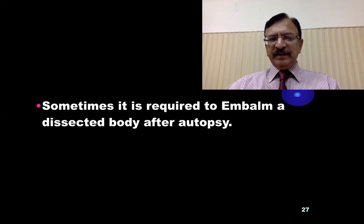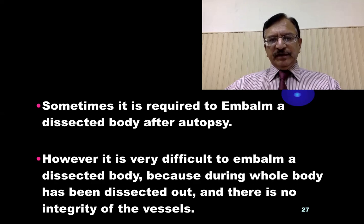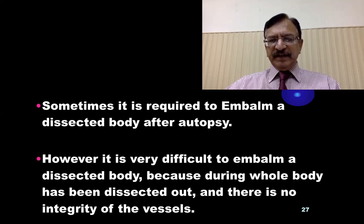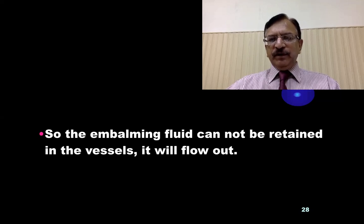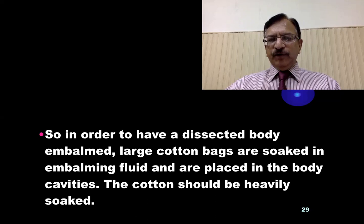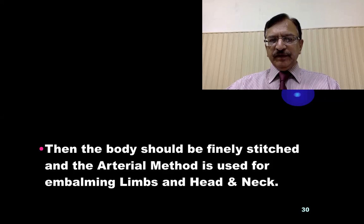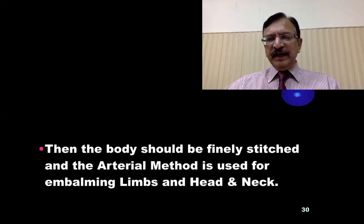Embalming on dissected bodies: sometimes it is required to embalm a dissected body after autopsy. However, it is very difficult to embalm a dissected body because the whole body has been dissected and there is no integrity of the vessels, so the embalming fluid cannot be retained and will flow out. In order to embalm a dissected body, large cotton bags are soaked in embalming fluid and placed in the body cavities, heavily soaked with embalming fluid. Then the body should be finely stitched, and the arterial method is used for embalming the limbs, head, and neck.